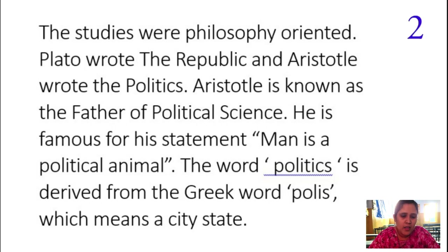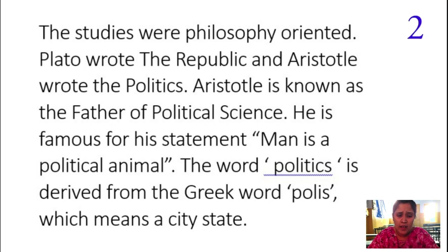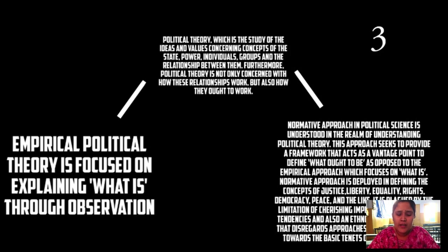When talking about empirical political theories, it focuses on explaining — what conclusions are reached after observation. It shows about behavioral aspects: what type of aspects have been utilized from one state to another state. It will be observed and explained on the basis of observation. That type of theory is known as empirical political theory.